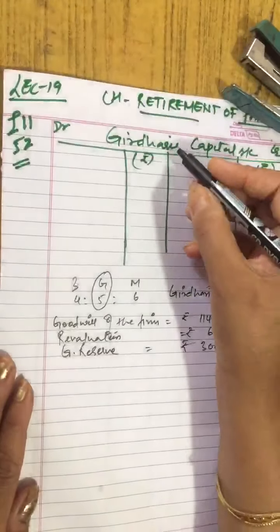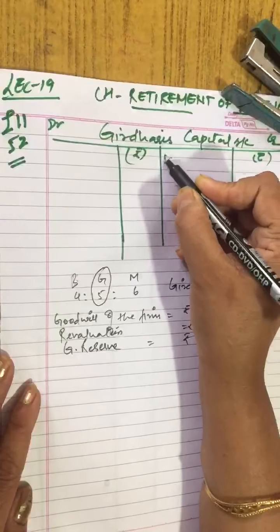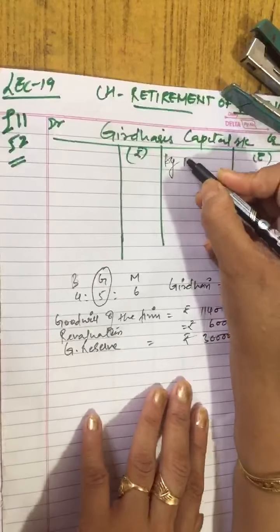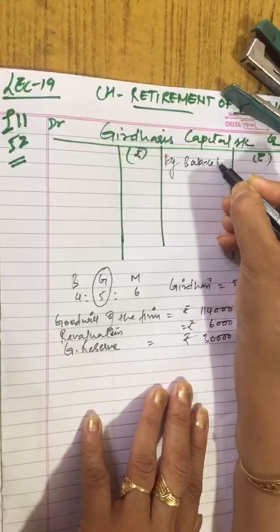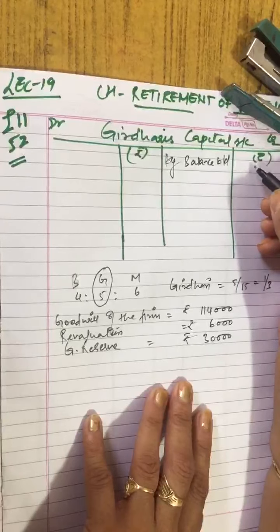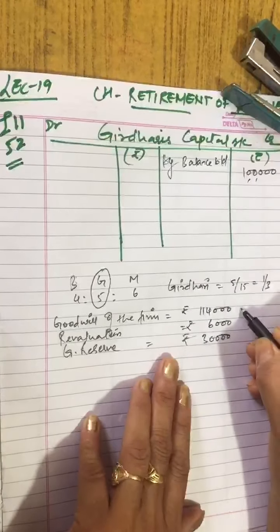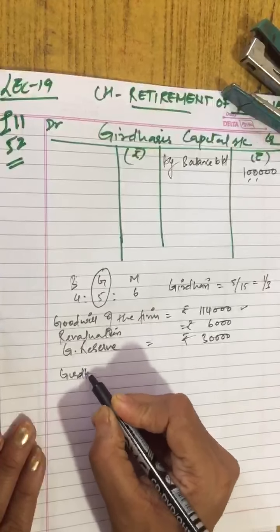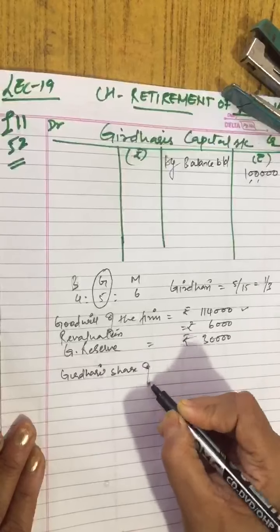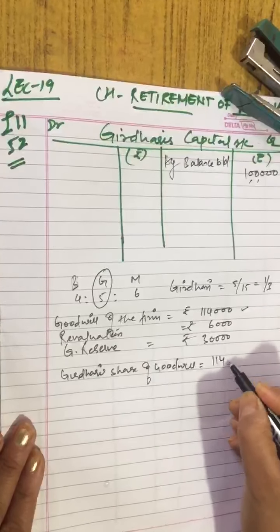Question is asking to prepare the Girdhari's loan account till it is finally paid. To Girdhari we will pay till three years.